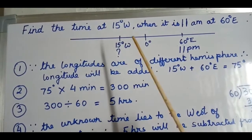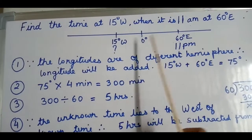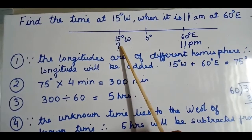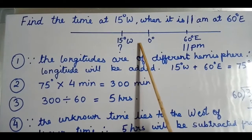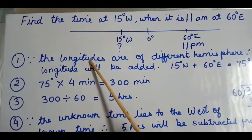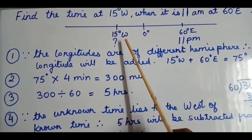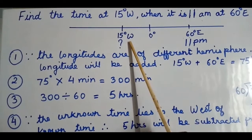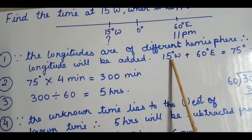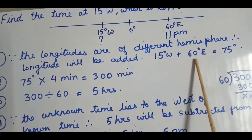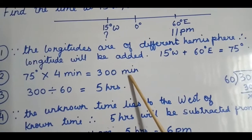So far we've done examples with longitudes in the same hemisphere — east and east, west and west. Now we'll cover longitudes in two different hemispheres. Here the first step changes: when longitudes fall in different hemispheres, the first step is addition. So we add 15 degrees plus 60 degrees to get 75 degrees.